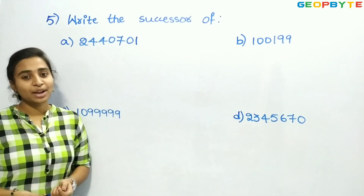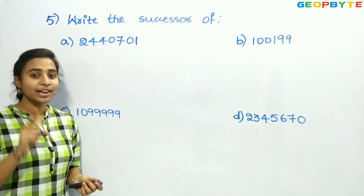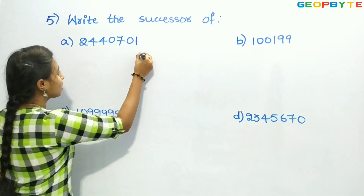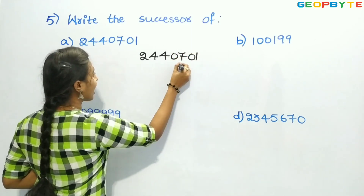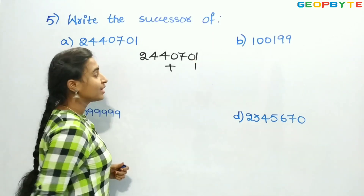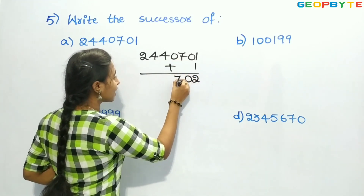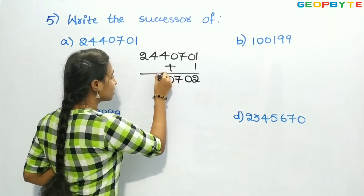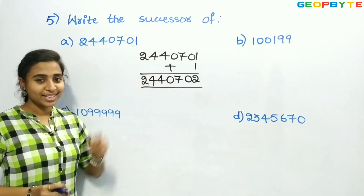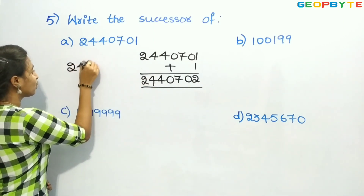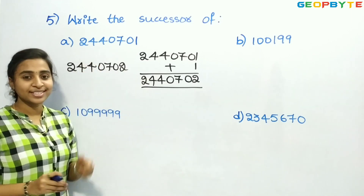We need to write the successor of 24,40,701. Successor means the number next to it, obtained by adding 1. So 24,40,701 plus 1: 1 plus 1 is 2, and the remaining digits stay the same — 0, 7, 0, 4, 4, 2. So the successor is 24,40,702.